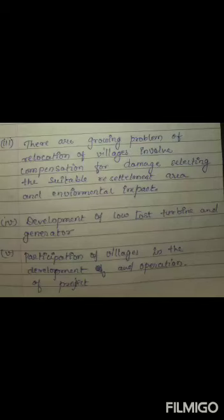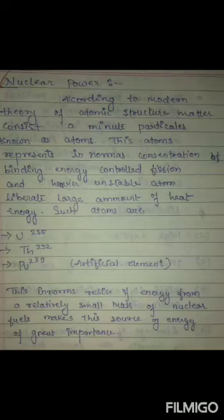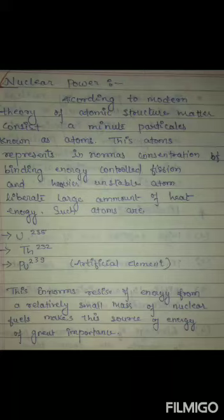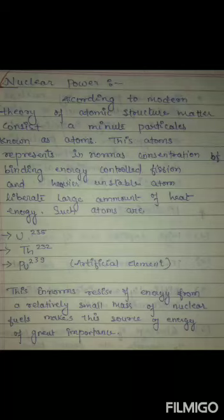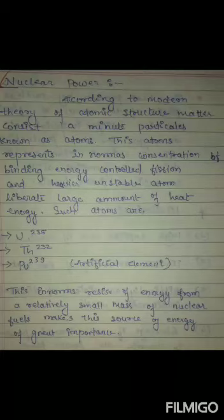Nuclear power plant: According to the modern theory of atomic structure, matter consists of minor particles known as atoms. These atoms represent enormous concentrations of binding energy. Controlled fission of heavier unstable atoms liberates large amounts of heat. Such atoms are uranium-235, thorium-232, and plutonium-239 — plutonium being an artificial element. The large energy output relative to the small mass of nuclear fuel makes this an energy source of great importance.